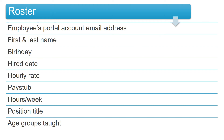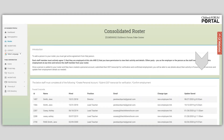Before getting started on the roster, gather the following information for each of the required staff: employee's email address used to create their personal portal account, first and last name, birthday, date hired, hourly rate of pay, pay stub, number of hours worked per week, position title, and age groups they teach. To complete the roster, log into the business account and click Roster on the left-hand side.